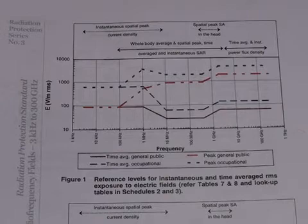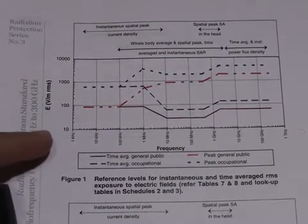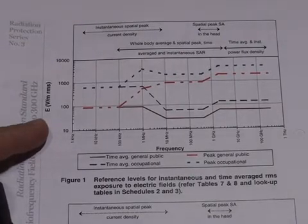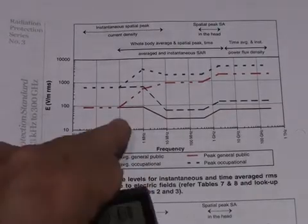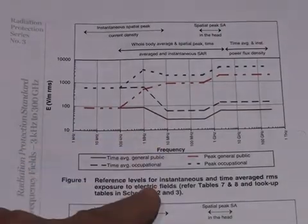The effects of electromagnetic energy on living tissue are quite complex. Here in the ACMA publication we have a graph showing electric field strength in volts per meter versus frequency and the limits for a number of different scenarios.